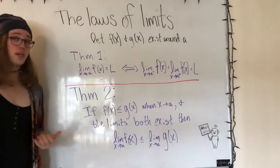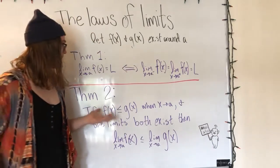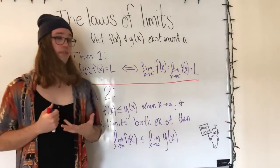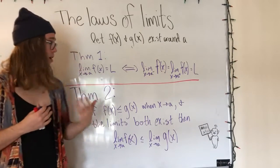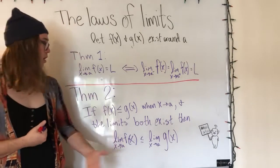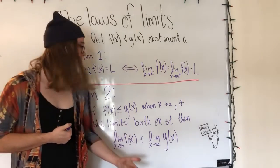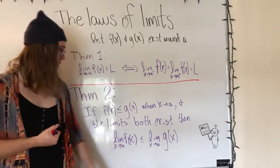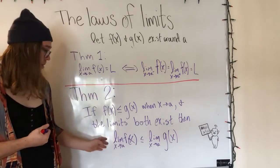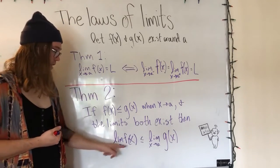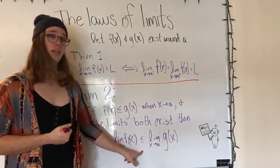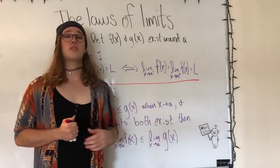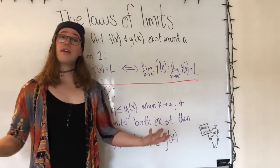Theorem two states that if f of x is less than or equal to g of x when x is near a, and the limits of both exist, then the limit as x approaches a of f of x is going to be less than or equal to the limit as x approaches a of g of x.